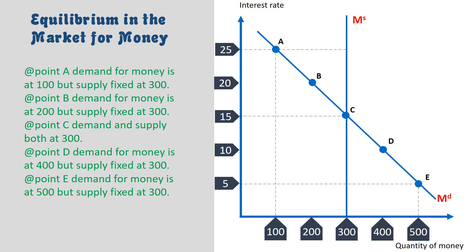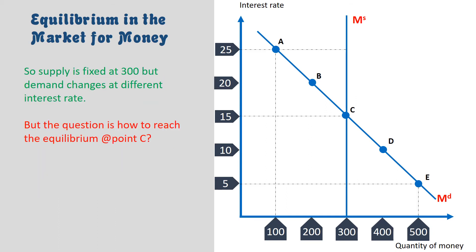Now we are going to learn how to establish the market equilibrium interest rate. At point A, demand for money is at 100 but supply is fixed at 300. At point B, demand is at 200 but supply is fixed at 300. At point C, demand and supply are both at 300. At point D, demand is at 400 but supply is fixed at 300. At point E, demand is at 500 but supply is fixed at 300. We can see the equilibrium point at point C, where supply is fixed at 300 but demand changes at different interest rates.